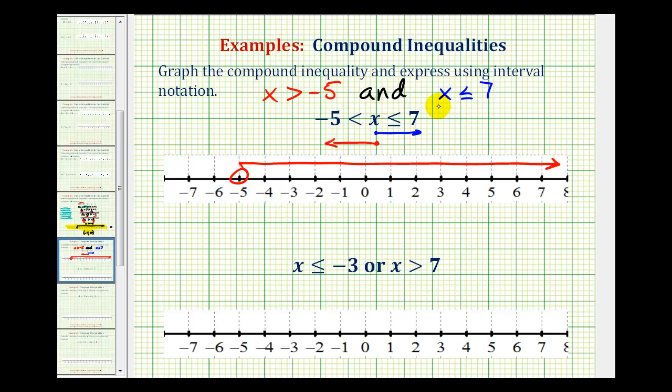And x also has to be less than or equal to seven. And because this interval does include seven, we'd make a closed point on seven. And then for numbers less than seven, we'd have an arrow to the left.